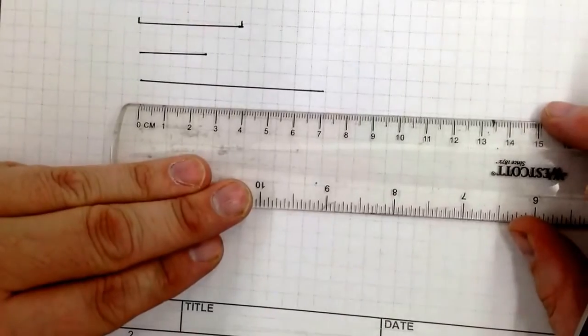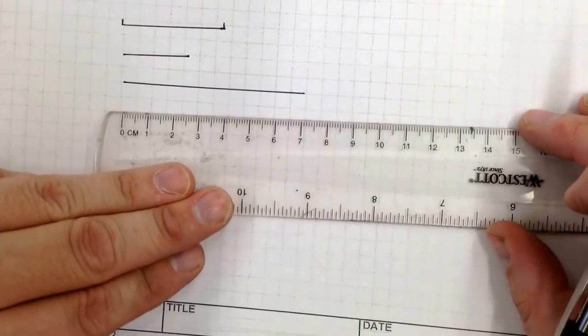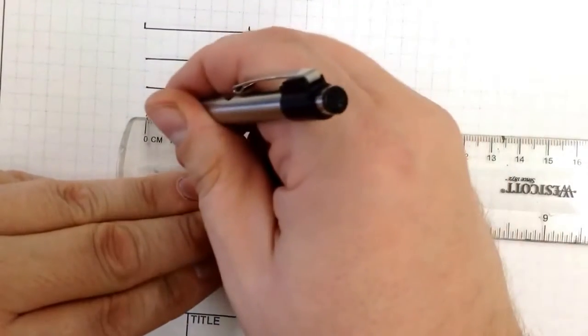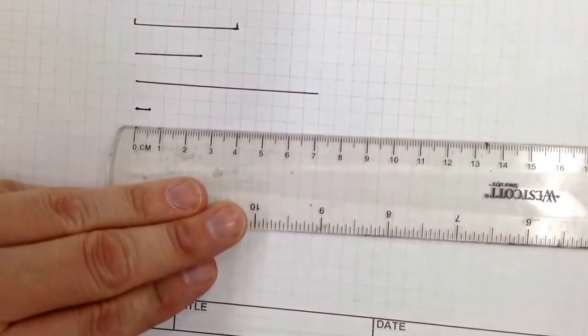If I have something that says 0.5 centimeters. There, to 0.5, that is 0.5 centimeters.